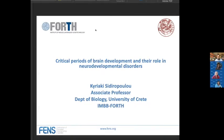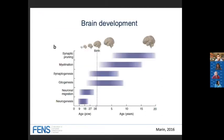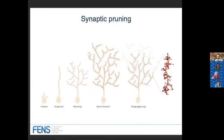My name is Kiki Sidropoulou, and I will talk about critical periods of brain development and their role in neurodevelopmental disorders. I will speak about stages slightly later than those Simon mentioned. Brain development initiates in embryonic life with neurogenesis and neuronal migration; however, it continues through postnatal life until adulthood with processes such as gliogenesis, synaptogenesis, myelination, and synaptic pruning.